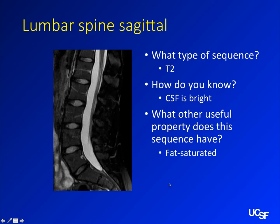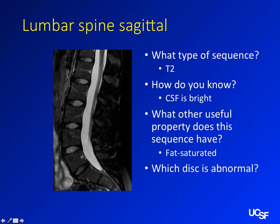Of these discs, which one is abnormal? L5-S1 is the abnormal disc. On T2 images the disc should be fluid-bright — not quite as bright as CSF — but this one is not as tall as it should be and not as bright as it should be. That's disc desiccation — you've lost the water signal in that disc. Here's a normal one and here's an abnormal one.